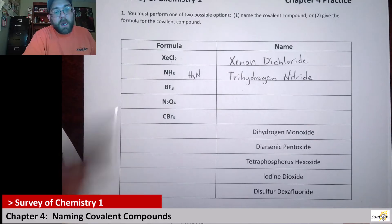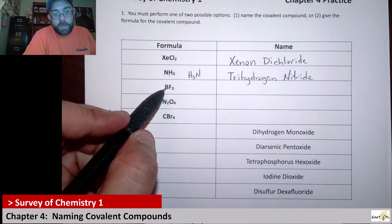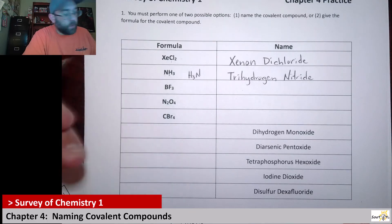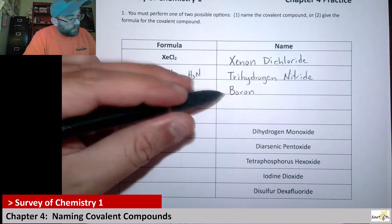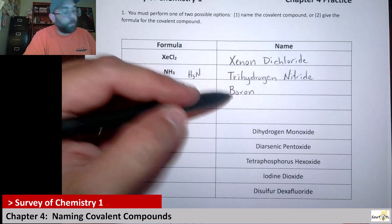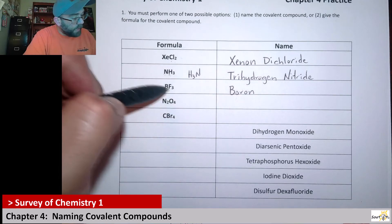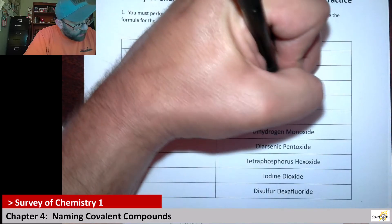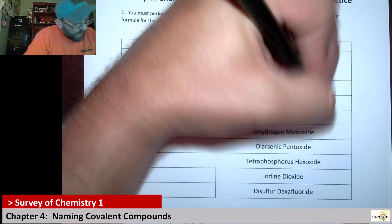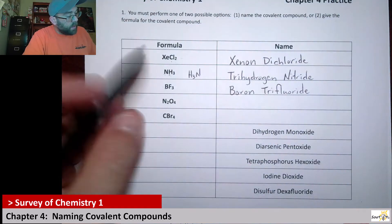Alright, here we have BF3. So for this one, the boron is less electronegative. So it would go first. And remember, there's only one of them. It's the first thing we write, so we don't have to write monoboron. But for the fluorine here, we have three of them. So we do have to put trifluoride as the name.